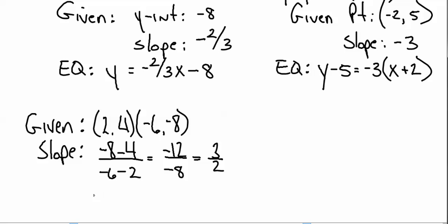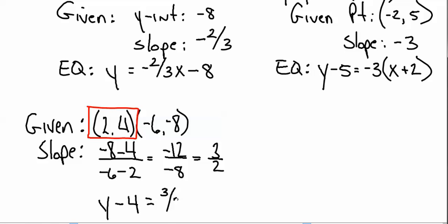So your equation is going to start with y. When you're given two points and writing the equation in point-slope form, use the first point. So what goes next to the y? Minus 4. Equals your slope, 3 over 2, times x, and then minus 2.